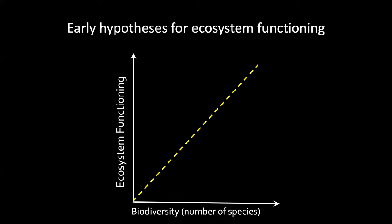A more popular hypothesis among ecologists surveyed in the late 1990s was the rivet redundancy hypothesis. This notion was that just like an airplane might be able to continue to fly for a while as it loses rivets, maybe ecosystems could do the same as they lost species. The idea was that just as some rivets are redundant and not all needed to keep the airplane's wing attached, species might also be somewhat functionally redundant.